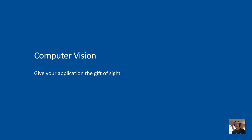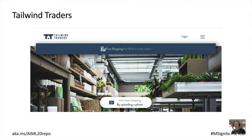Let's see how we can give an application the ability to see and customize it to our particular needs. This is the website for Tailwind Traders, a hardware retailer. The Tailwind Traders website has many usual e-commerce features: browsing the product catalog, ordering products online, and finding products in retail stores, as well as a few AI-enabled features. It's a fictitious company, which means I can give you all the source code to deploy this app yourself — the link is at the bottom.